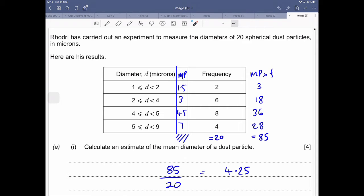And to do that, you need to find the midpoint, which is what this MP column will be here, because we're told that there's two of these dust particles that are somewhere between one and two microns. So the best place to guess if we don't actually know where they are is bang in the middle.